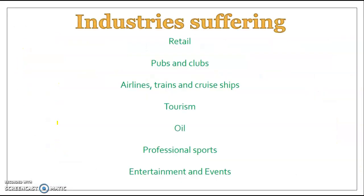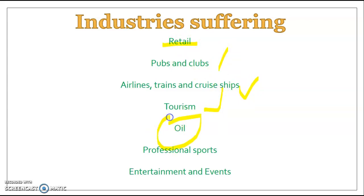Industries that are suffering include retail, pubs and clubs, anything related to tourism, oil — where prices have gone down significantly due to lack of demand — and professional sports, events, and entertainment. With people not allowed to meet in groups larger than two, all those industries are effectively generating no revenue.